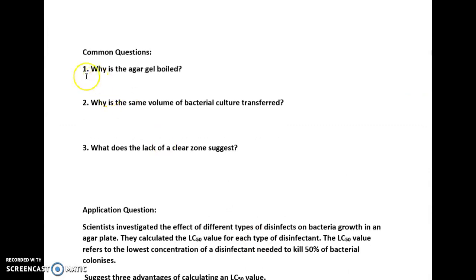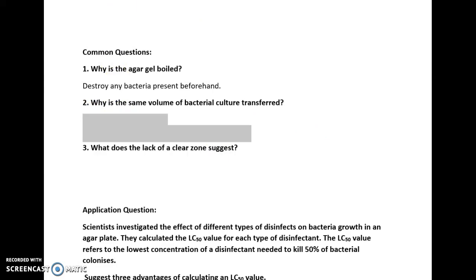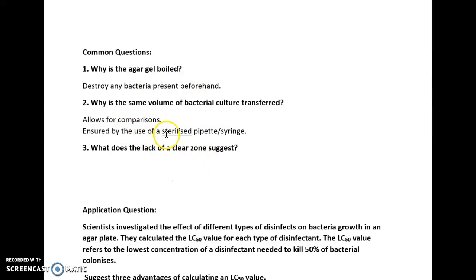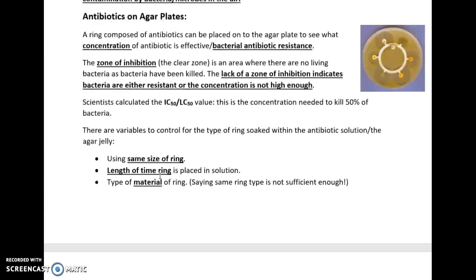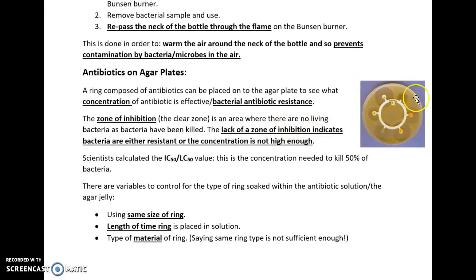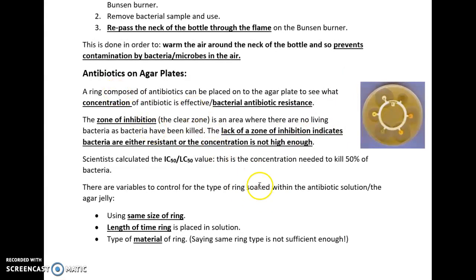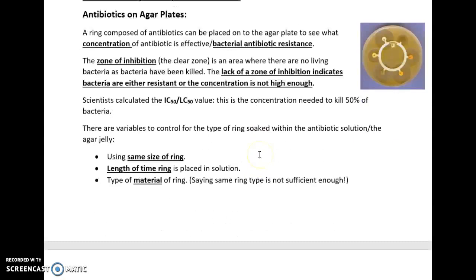Common exam questions: Why is the agar gel boiled? — To kill any bacteria that might be there. Why is the same volume of bacteria culture transferred from the liquid growth medium? — To allow for comparisons, ensured by the use of a sterilized pipette. What does the lack of a clear zone suggest? — Either bacteria are resistant or the concentration of antibiotic is not high enough. Also, if too much concentration is used, the zones of inhibition would overlap — for example, 0.6 mol dm⁻³ rings overlapping with 0.5 — meaning you wouldn't be able to see the resistance clearly.